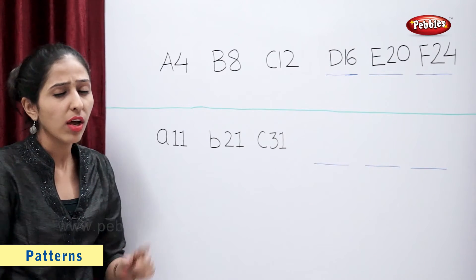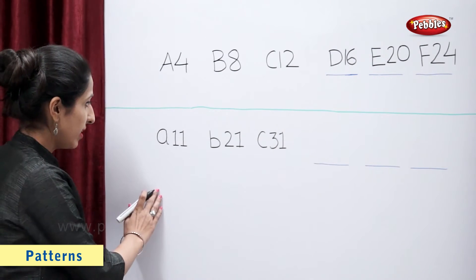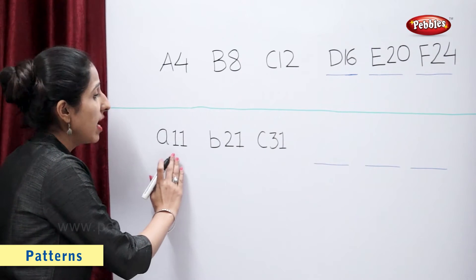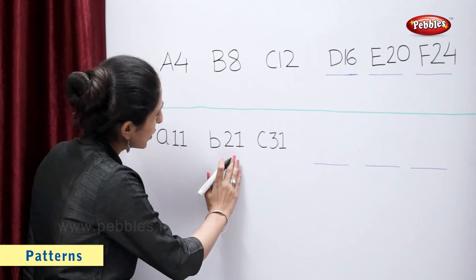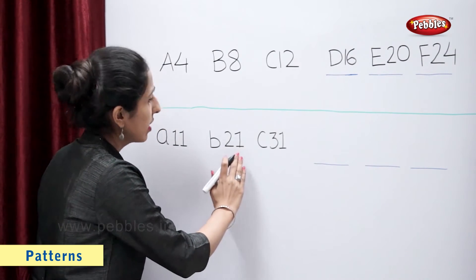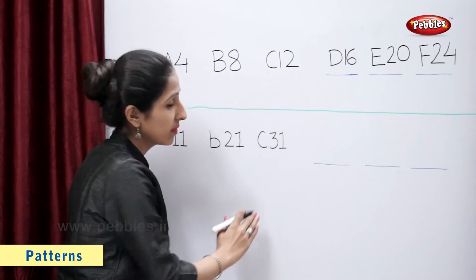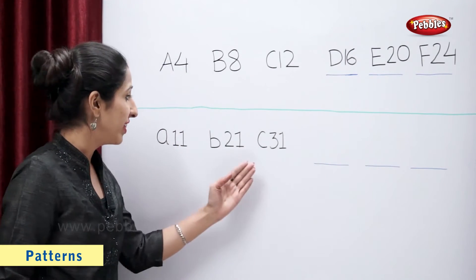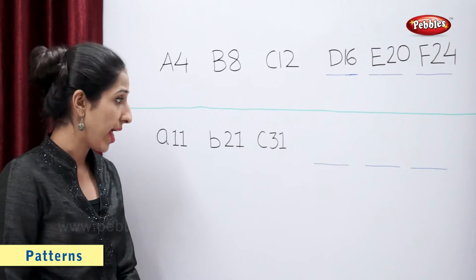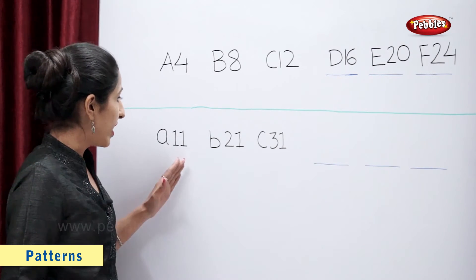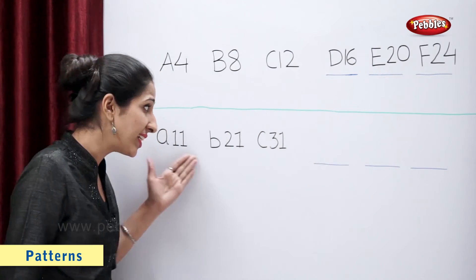Let's take one more example. Here, we have A11, B21, C31. In this example, the letters are in a sequence and there is a difference of 10 between these numbers.